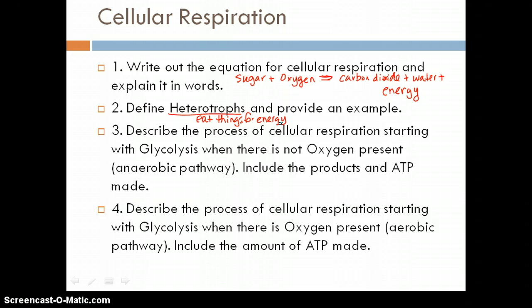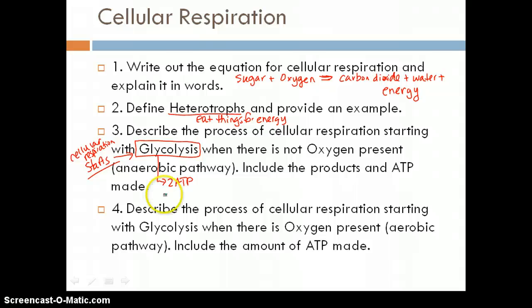Describe the process of cellular respiration starting with glycolysis when there's not oxygen present, and include the products and ATP made. So glycolysis is how it all starts. Cellular respiration starts with glycolysis no matter what. It always starts with glycolysis. And in glycolysis, it will make two ATP. It really makes four, but it uses two, so we get two ATP out of it. It will also make a couple things that can be used later on. So some other things are NADH and pyruvic acid. And pyruvic acid will turn the Krebs cycle later when it's needed.